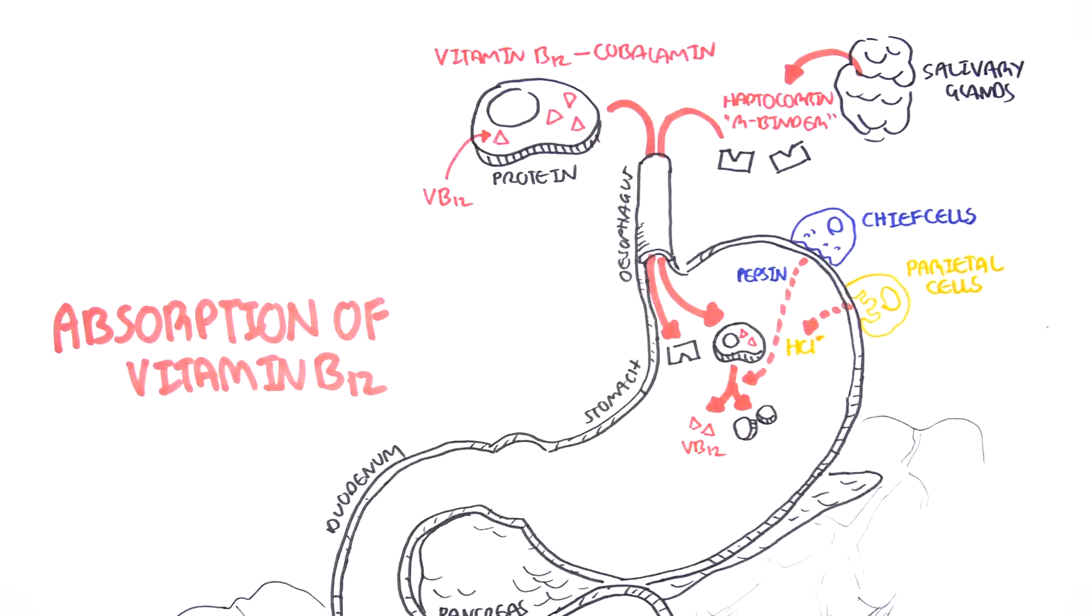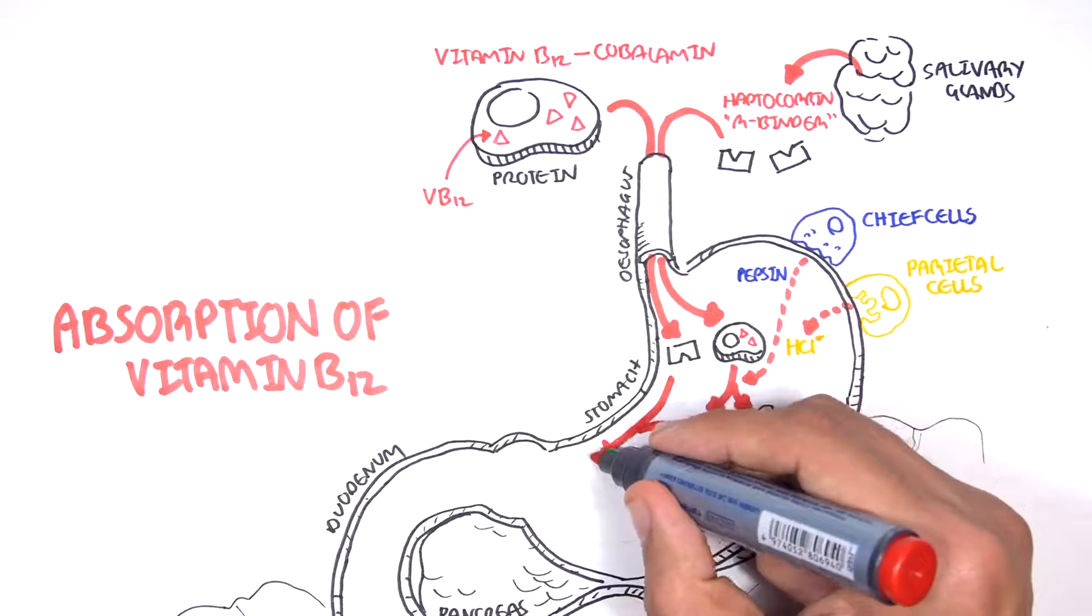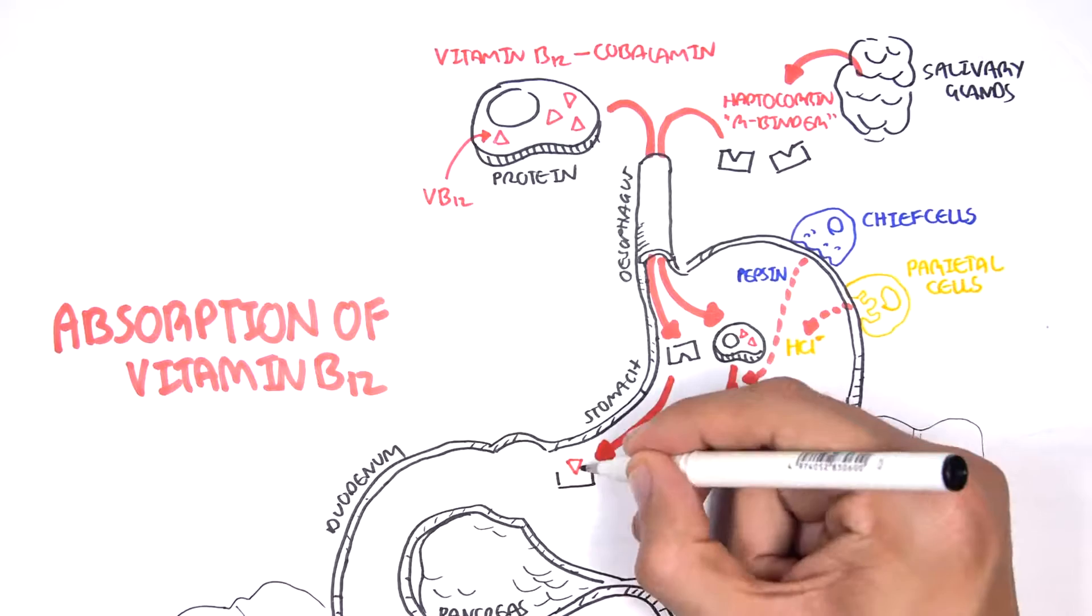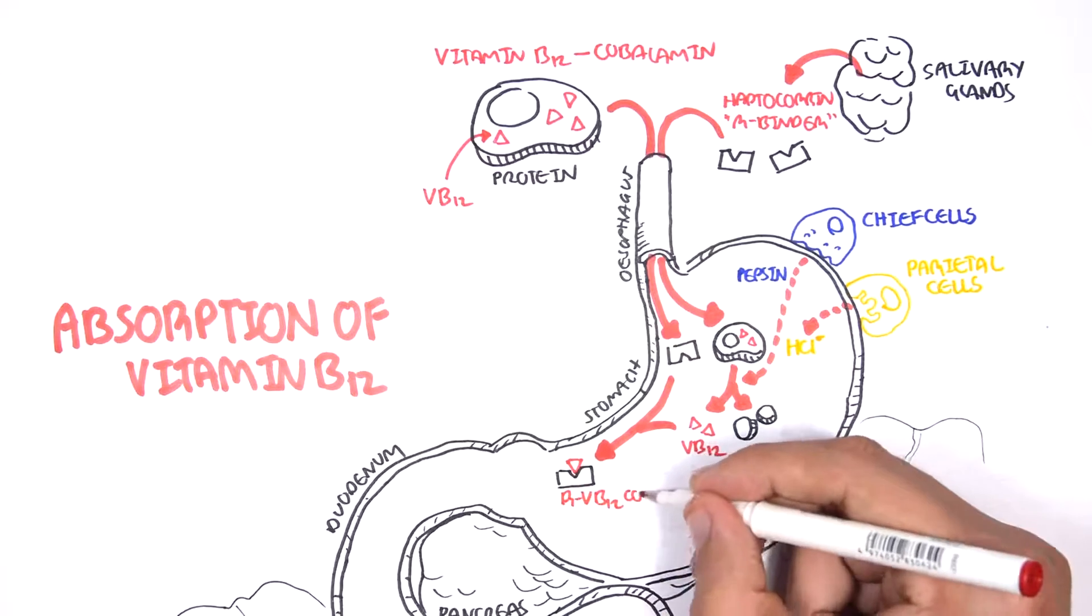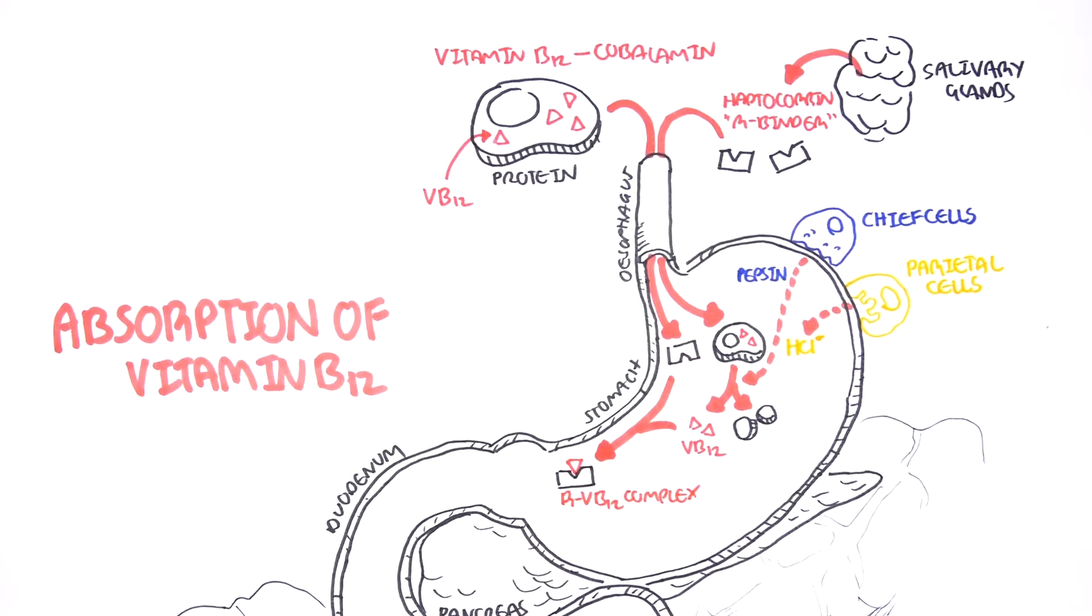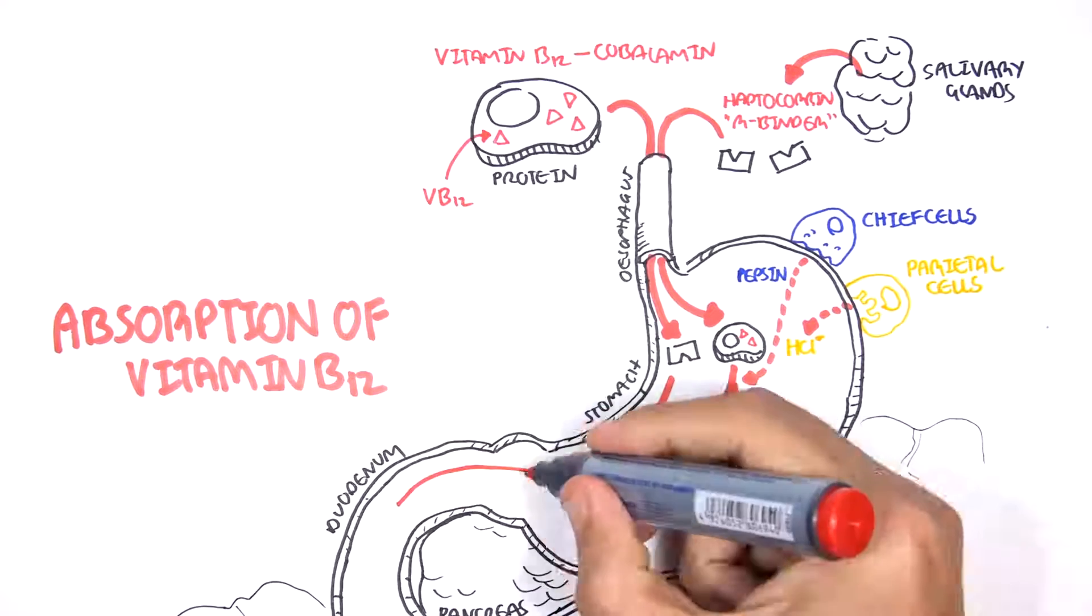The liberated vitamin B12 has high affinity for the R-binder within the stomach, and so they bind, forming the R-binder-vitamin B12 complex, and this complex then travels to the duodenum of the small intestine.